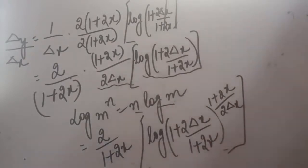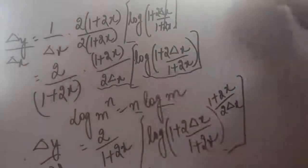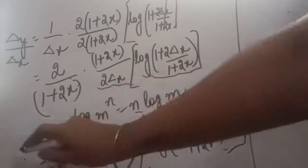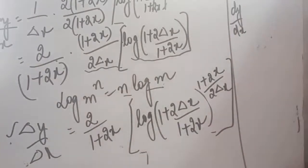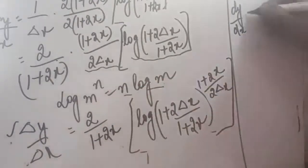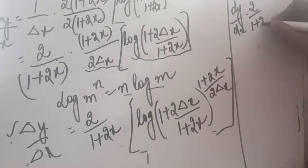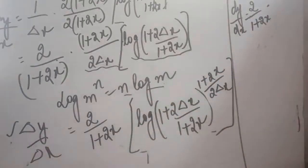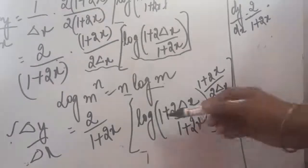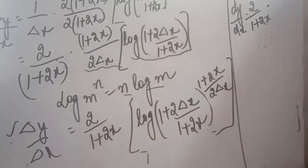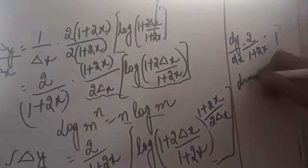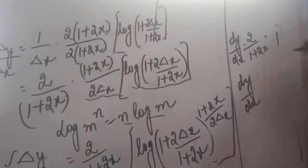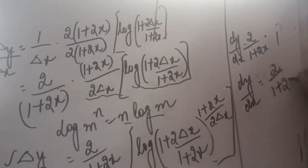Now finally we will take the limits on both sides. On the left hand side we were having delta y upon delta x — if we take the limit, it will become dy/dx, the derivative of y. On the right hand side, 2/(1 + 2x) is not affected. Taking the limit as delta x approaches 0, the power (1 + 2x)/(2 delta x) goes to infinity, and log(1 + 0) raised to that power — since anything raised to power 0 is 1 — gives log 1 = 0, so the whole expression equals 1. Therefore, the derivative equals 2/(1 + 2x).